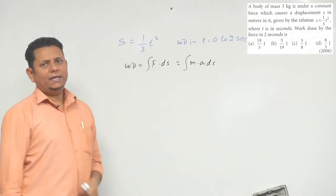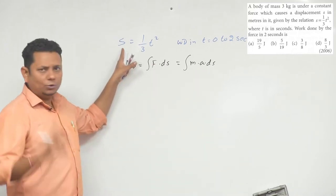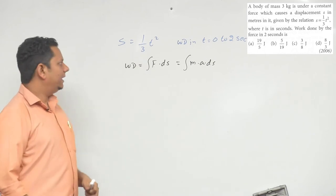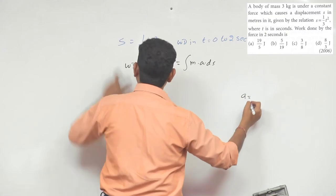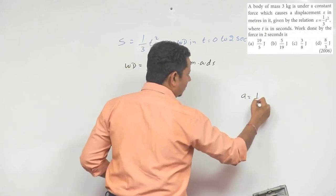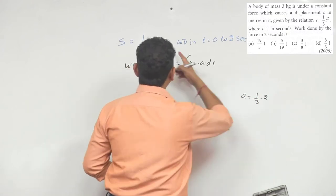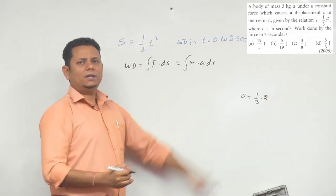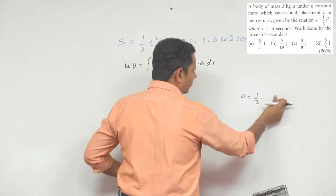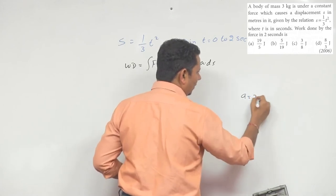Here we need to find the value of acceleration. When we differentiate this twice, we will get the acceleration value. Let's find the acceleration. When we differentiate twice: first differentiation gives (1/3) × 2 × T = (2/3)T, second differentiation gives acceleration = 2/3.